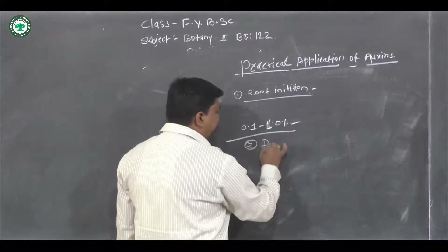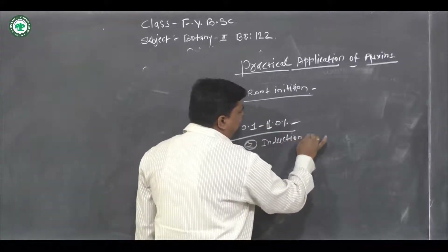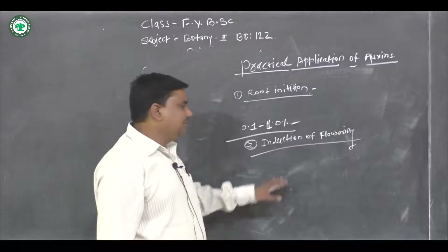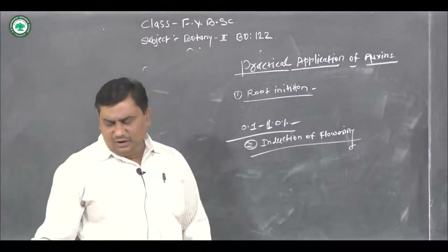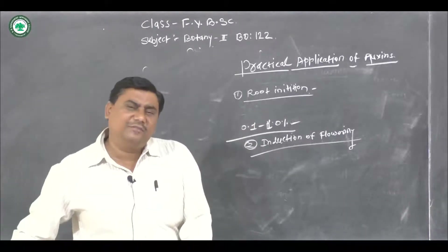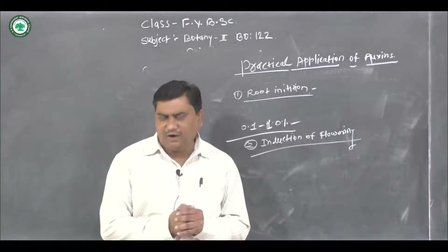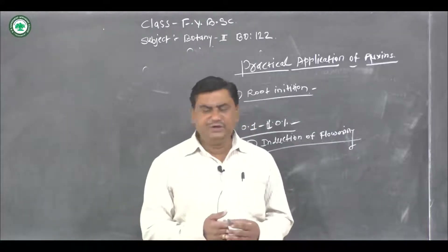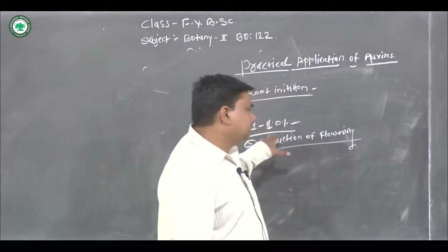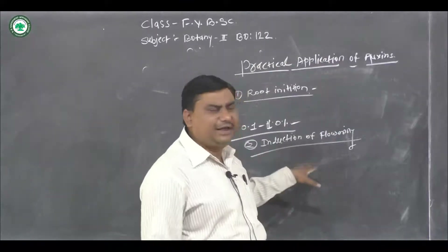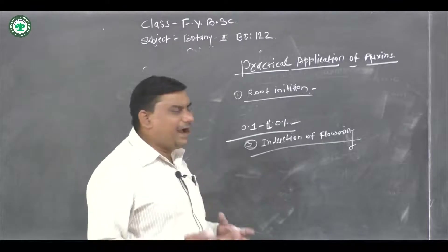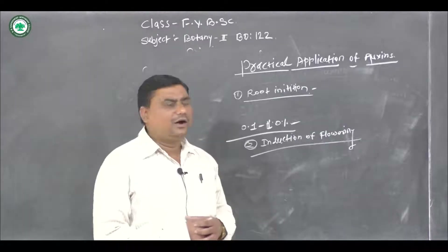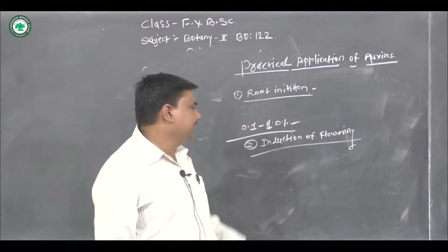Second application: induction of flowering in plants. By application of a minute quantity of auxin, flowering can be accelerated or induced in many plants. In day-neutral plants, auxins act as a flowering stimulus.